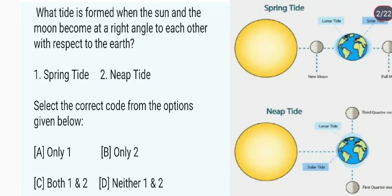What tide is formed when the sun and the moon are at a right angle to each other? Jab sun and moon right angle pe ho jate hain, to neap tide hota hai. Answer is B — neap tide hoti hai. Aur jab straight hote hain to spring tide hoti hai. Yeh mahine mein do baar hota hai.